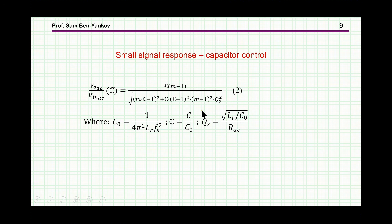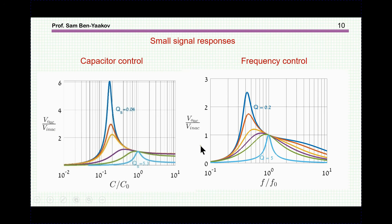The transfer function of this converter, now expressed as a function of capacitance, is shown here and is very similar to what we saw before. Comparing the frequency-control and capacitance-control transfer functions, they look essentially the same — the Q values are defined differently, but the shapes are identical, and the capacitance-control case actually shows slightly better behavior. The conclusion is that by changing the capacitance, you change the resonant frequency and can thereby control energy transfer between input and output in the resonant LLC converter.